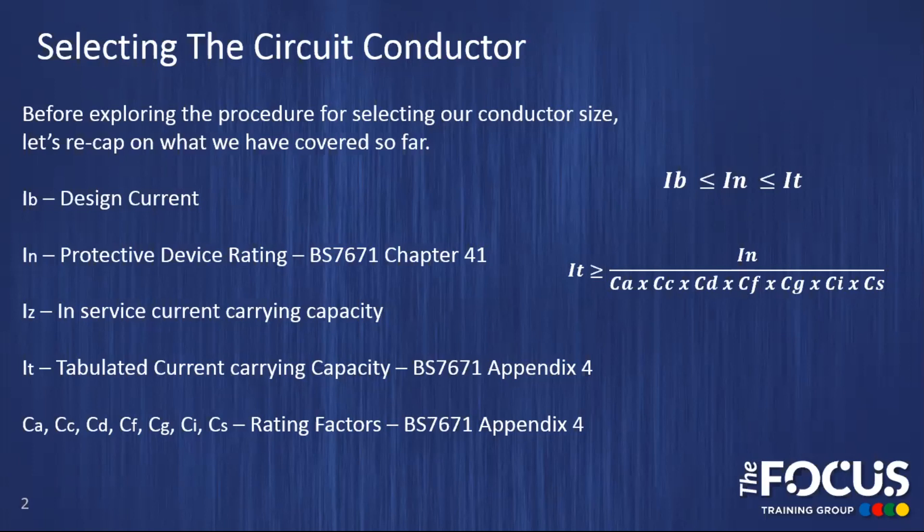We also looked at identifying the rating factors that are applicable to our calculation. We took into consideration things like ambient temperature, grouping, cables buried in the ground and cables run through thermal insulation. We consulted Appendix 4 of BS 7671 to identify the appropriate factors to use in our calculations.